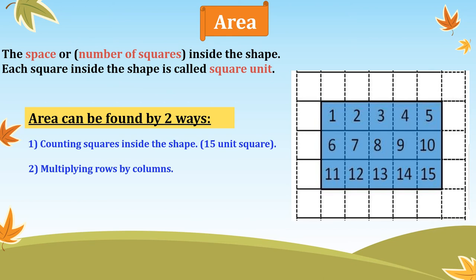Second way: multiply rows by columns — just like an array. How many rows? Three. How many columns? Five. So 3 times 5 equals 15. The area is 15 square units. Both methods give the same answer.